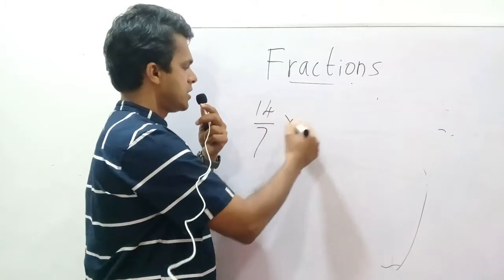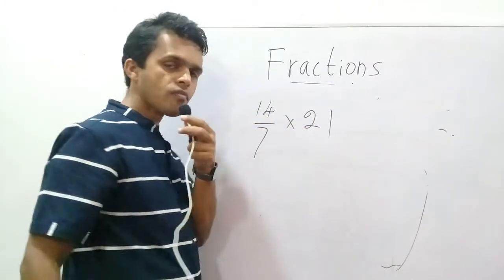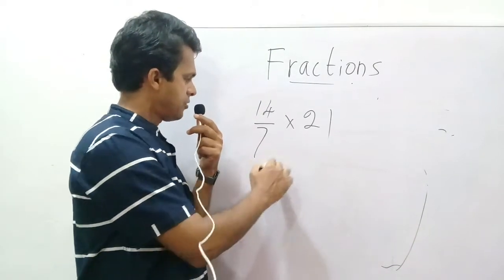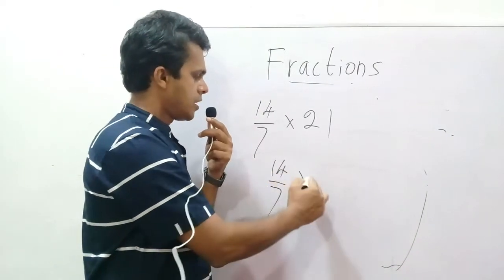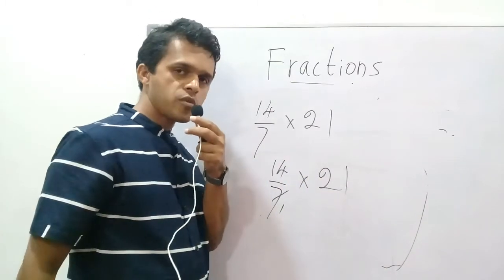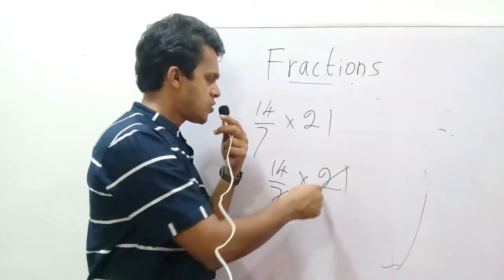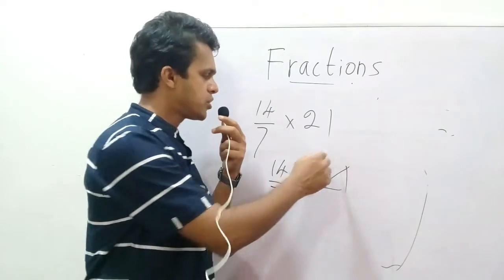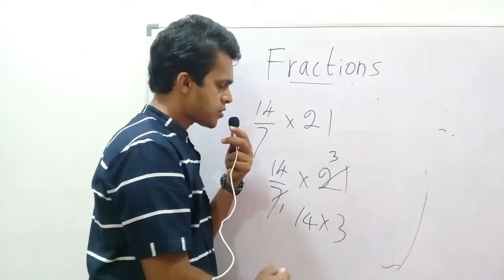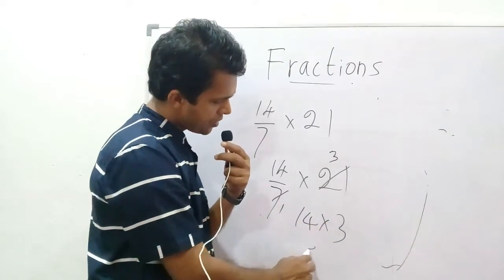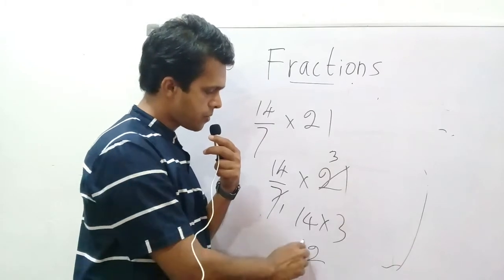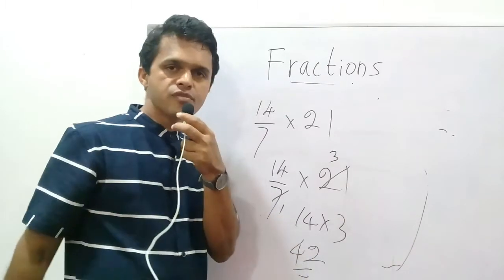Next sum: 14 over 7 into 21. How do you do that? 21 is a multiple of 7, therefore you could write 3 times. 14 times 3: 3 times 4 is 12, remainder 1; 3 times 1 is 3, plus 1 is 4. The answer is 42.